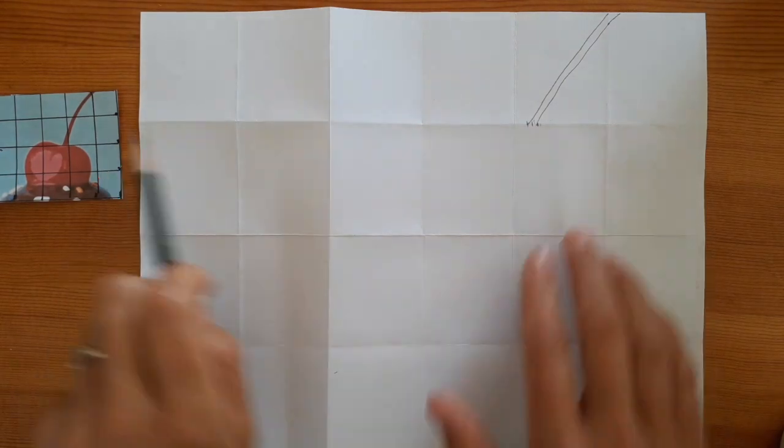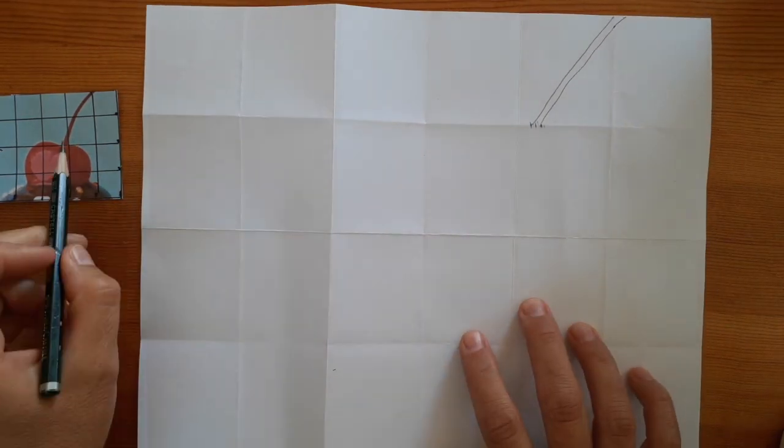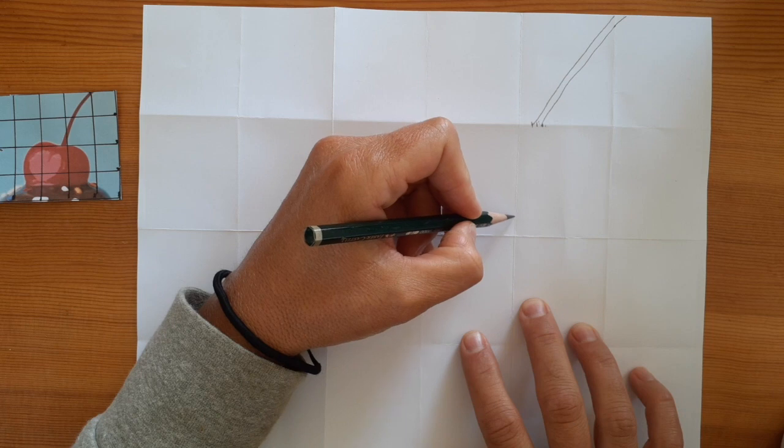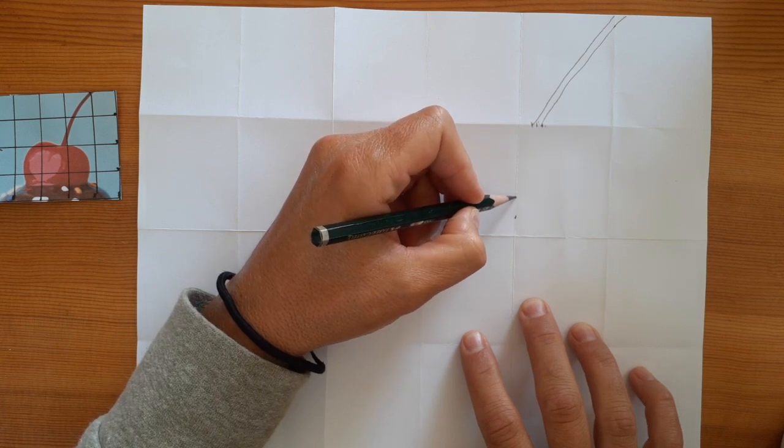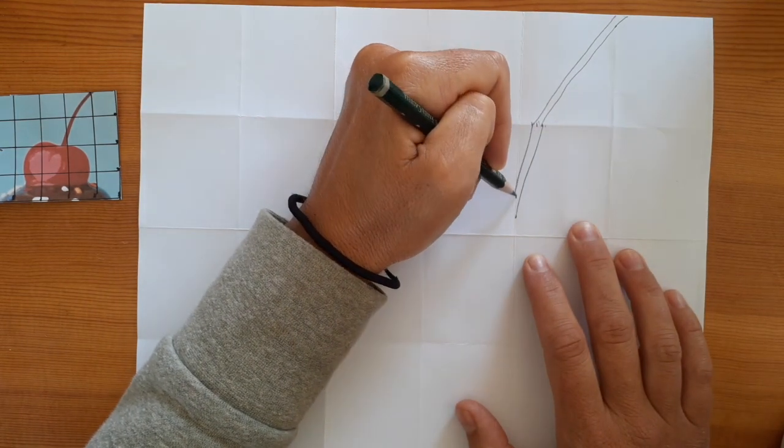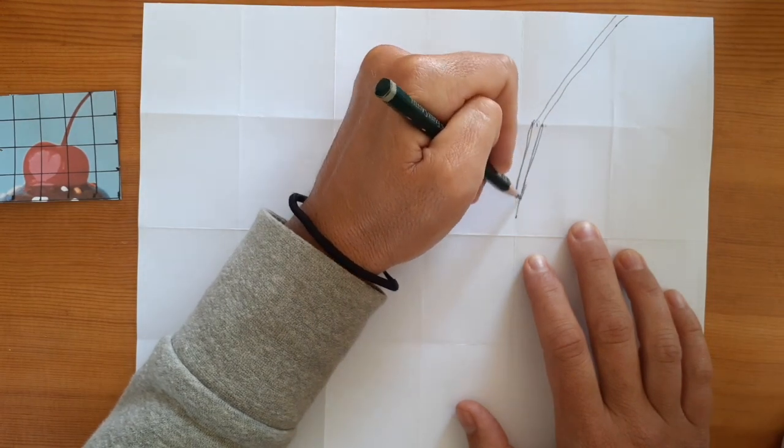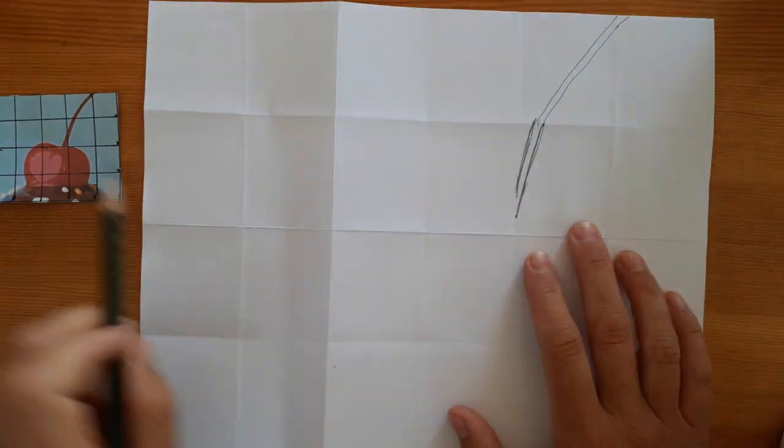I repeat this step for every square in my grid. Grid drawing is a great technique for making sure that your object is the right size and in the right location on your paper.